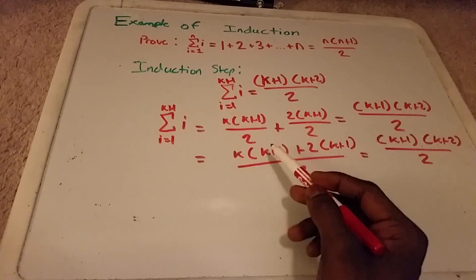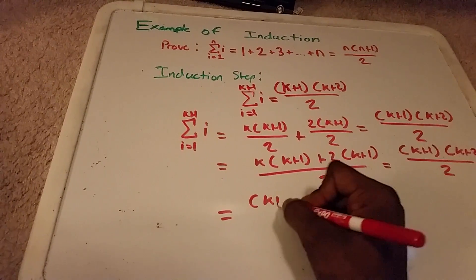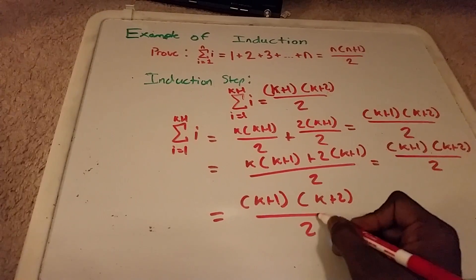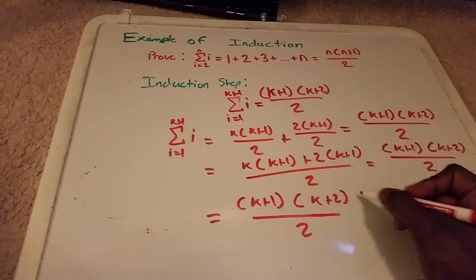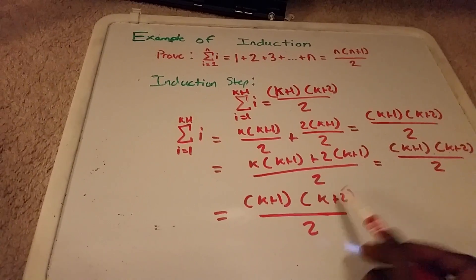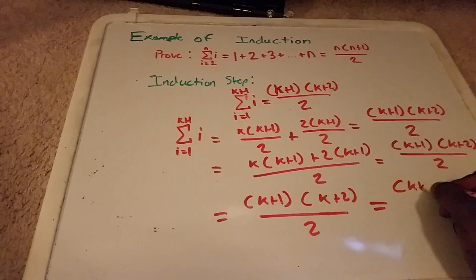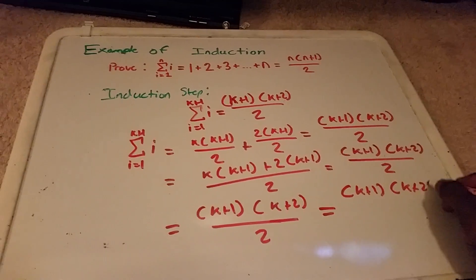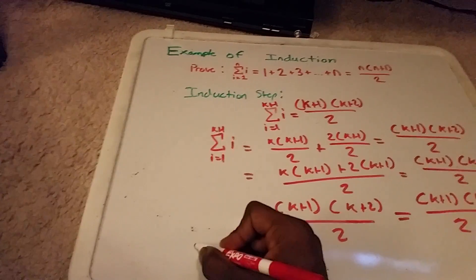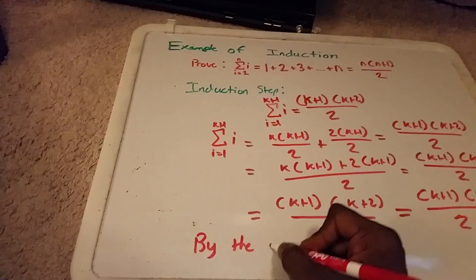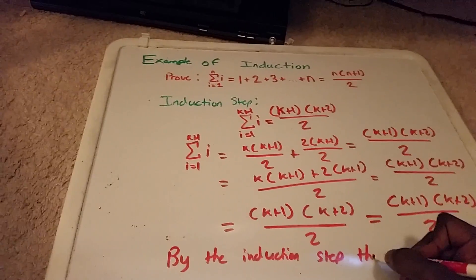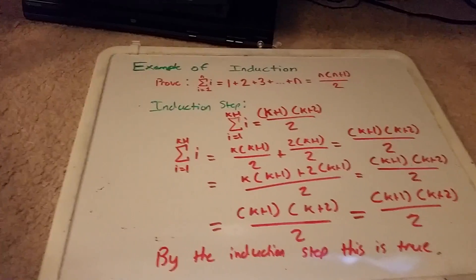Now we can see that we have a common factor of k plus 1. We factor out k plus 1 and get k plus 2. So we have k plus 1 times k plus 2 all over 2, which is exactly what we wanted. By the induction step, this is true. Thanks.